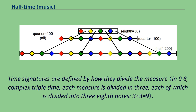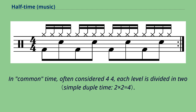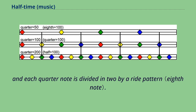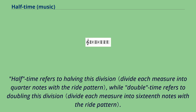Time signatures are defined by how they divide the measure. In common time — often considered 4/4 — each level is divided in two. In a common time rock drum pattern, each measure is divided in two by the bass drum, each half is divided in two by the snare drum, and each quarter note is divided in two by a ride pattern. Halftime refers to halving this division, while double time refers to doubling it.